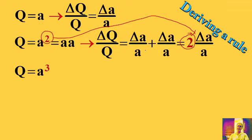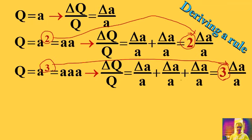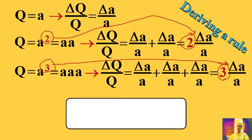What if q is a to the power of 3? I can rewrite it as a times a times a, triple a. And so the answer is 3 times delta a over a. The exponent comes here as a multiplier. So the general rule could be derived like this.